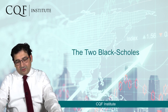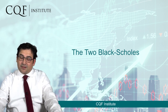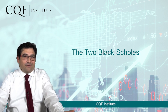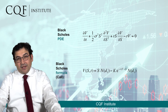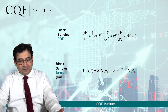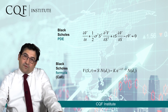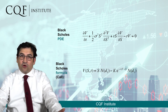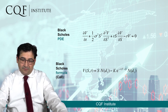When we talk about Black-Scholes, we are in a bit of confusion, because there are in fact two Black-Scholes formulas — so which are we referring to? There is the Black-Scholes PDE, or partial differential equation, which is the one shown at the top. And we have the Black-Scholes formula for a call option, shown in the bottom part of the image.